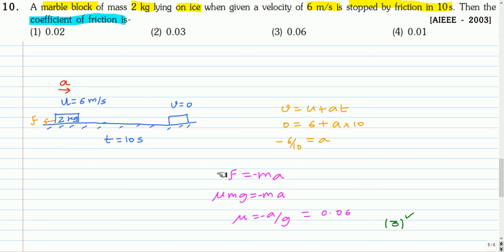From the free body diagram of this marble we get friction force equal to ma, and friction force is μmg, because it is moving. From this we get μ as minus a by g, and a is negative quantity minus 6 by 10. So from this we get the coefficient of friction μ as 0.06. The correct option is option 3.